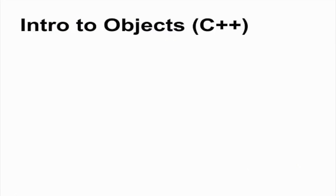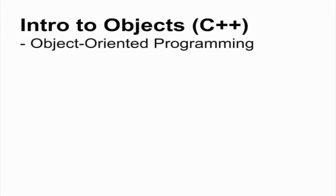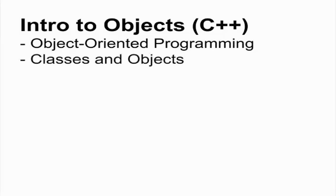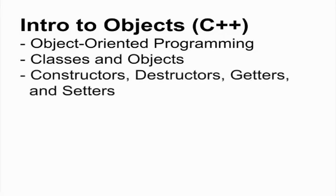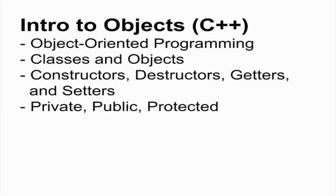In this tutorial, we will be taking an introductory look at object-oriented programming in C++. Here we will look at classes and objects and their various components. We will look at the basic types of class operations such as constructors, destructors, setters, and getters. Finally, you will look at the keywords private, public, and protected.